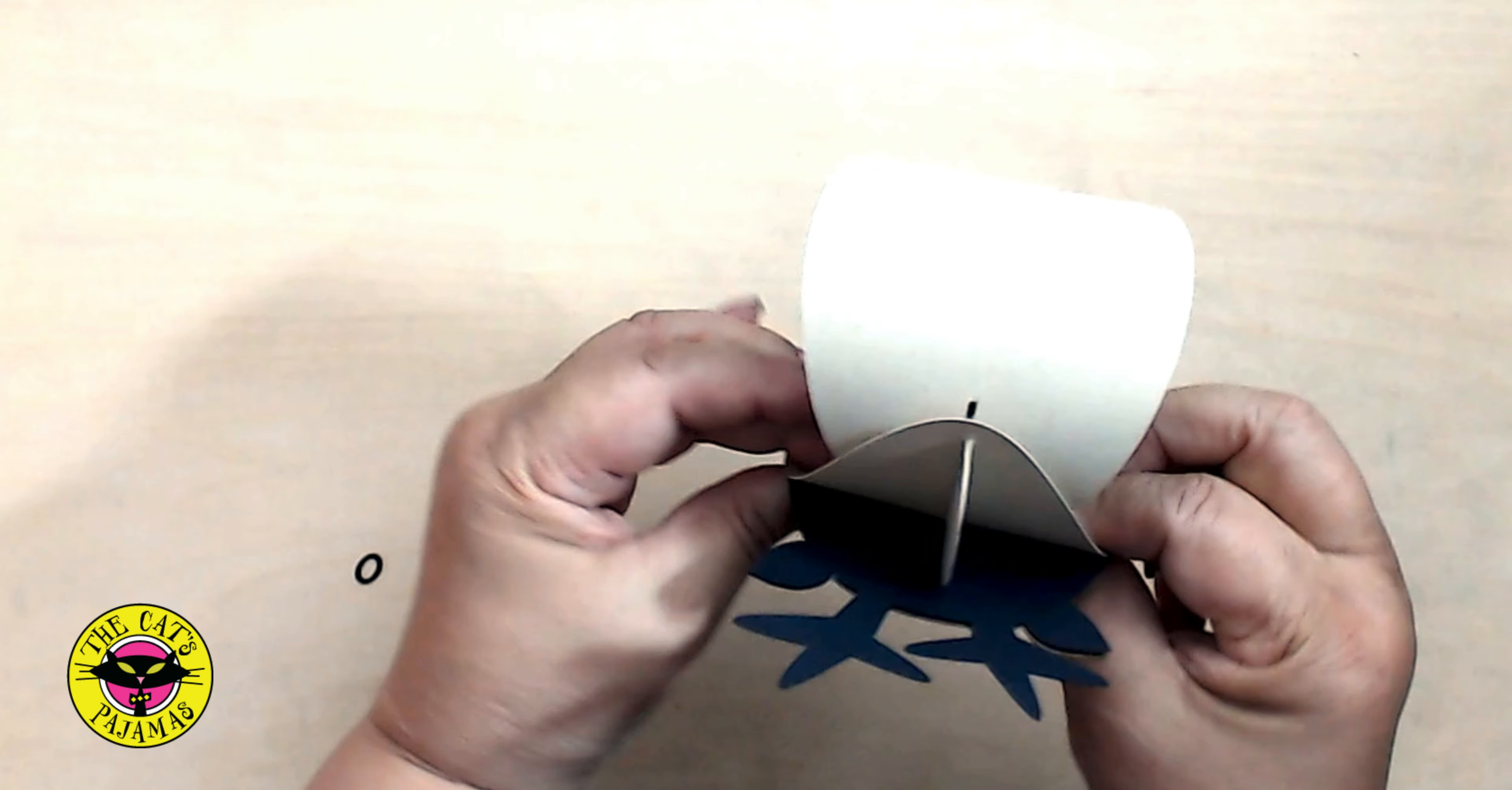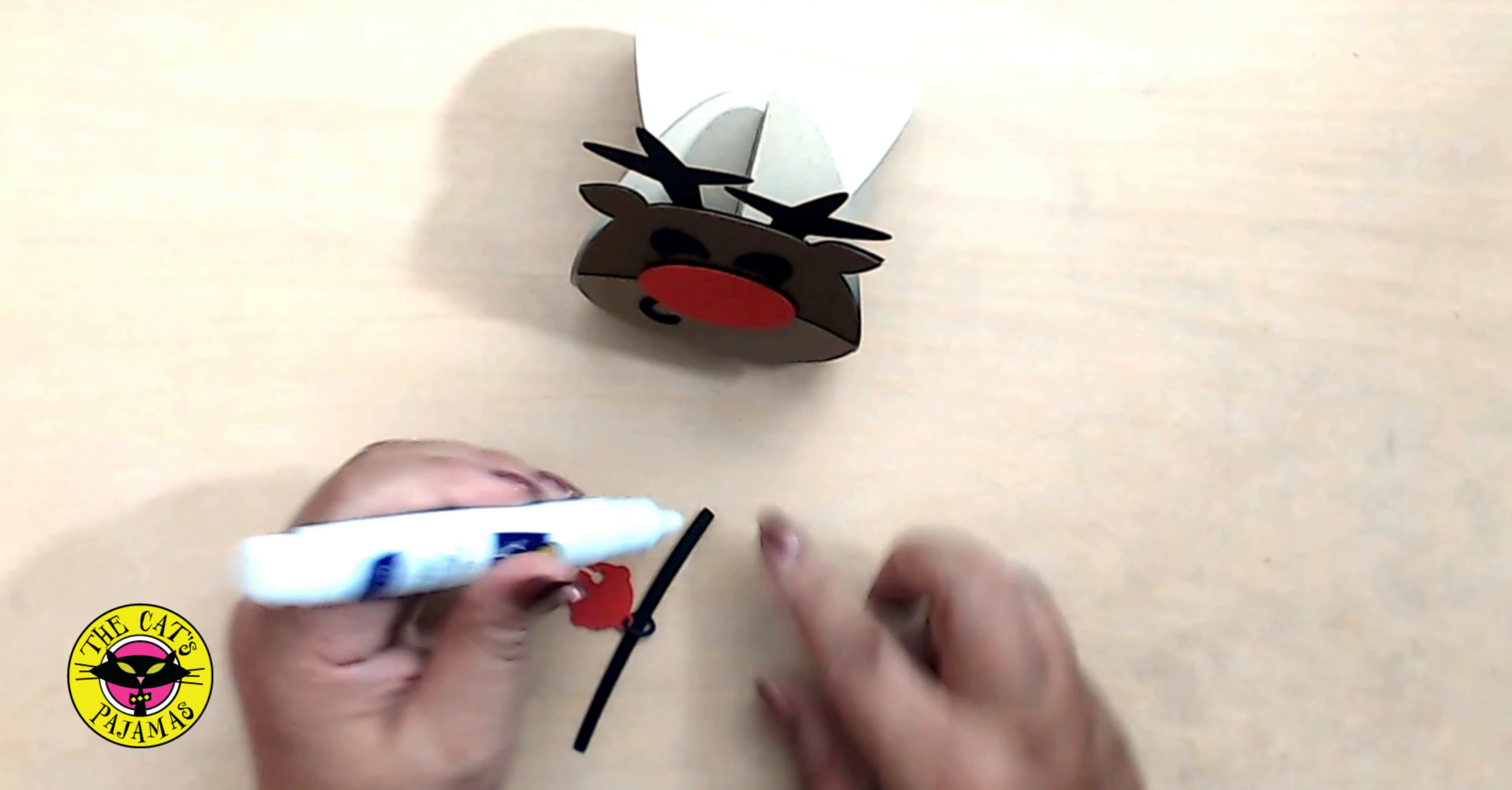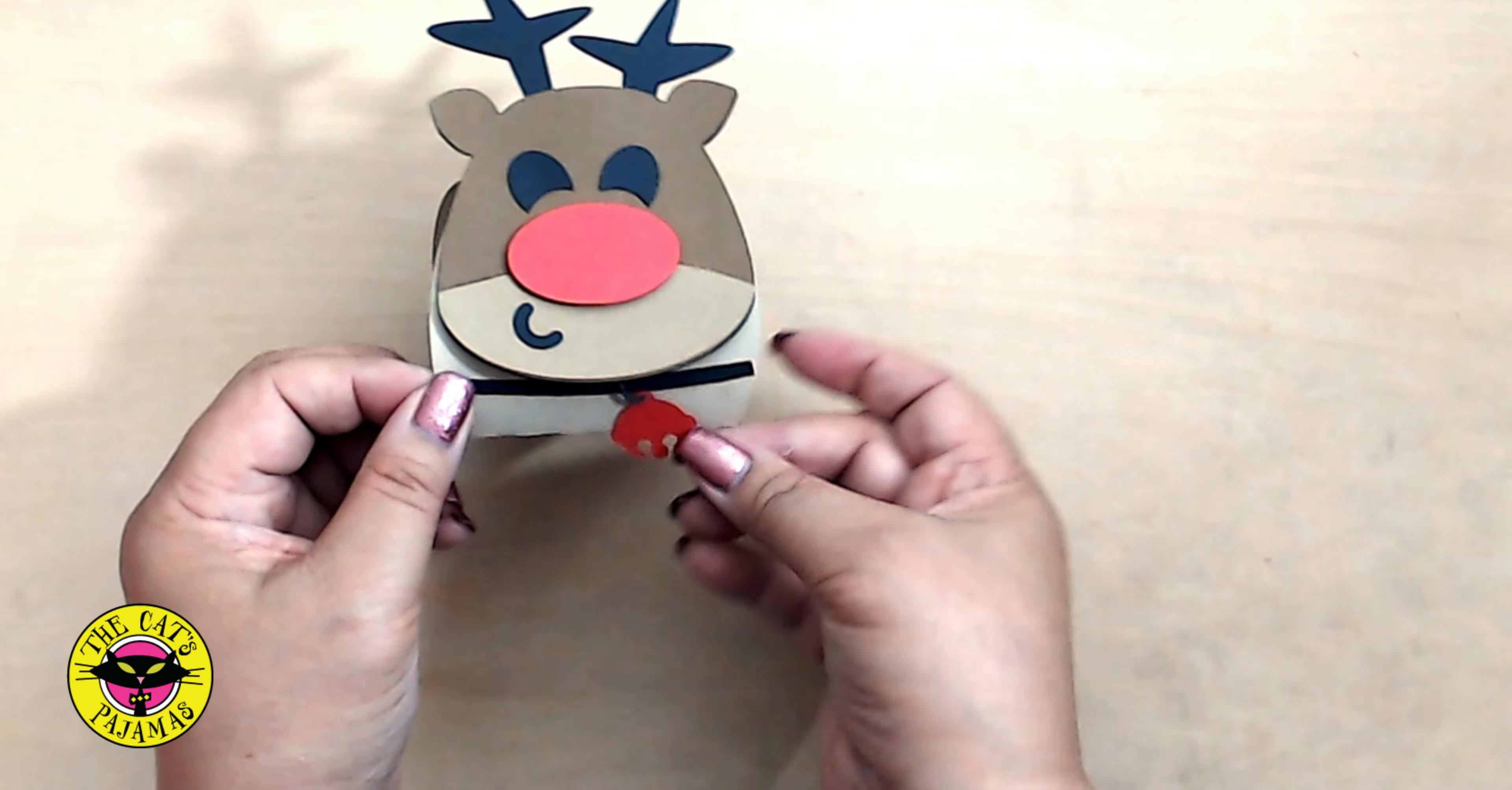Now for the collar. Pick up the link and you'll notice there's a little slit in it. Slide the bell onto the link and then slide the link onto the collar. Use the adhesive to attach the collar under the reindeer head. Now if you're afraid of losing the bell, you can attach it to the box.